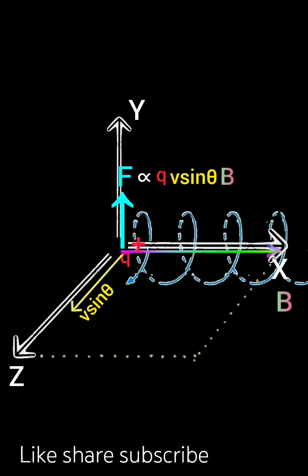The charged particle performs circular motion as force is perpendicular to v sin theta and at same time displaced horizontally due to v cos theta. Hence the resultant motion is helical motion.